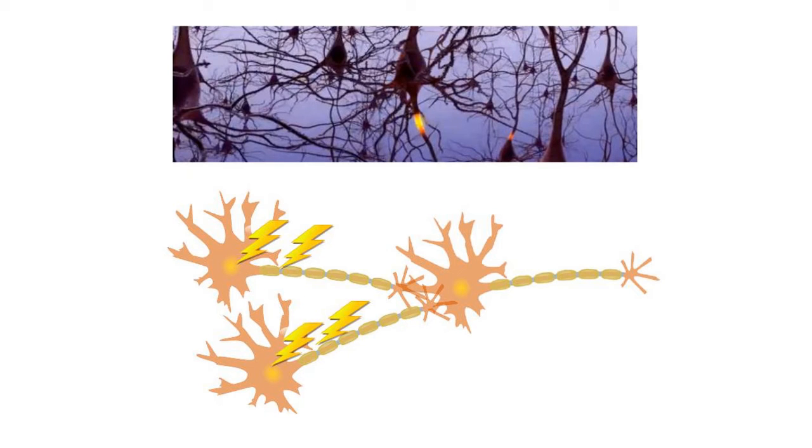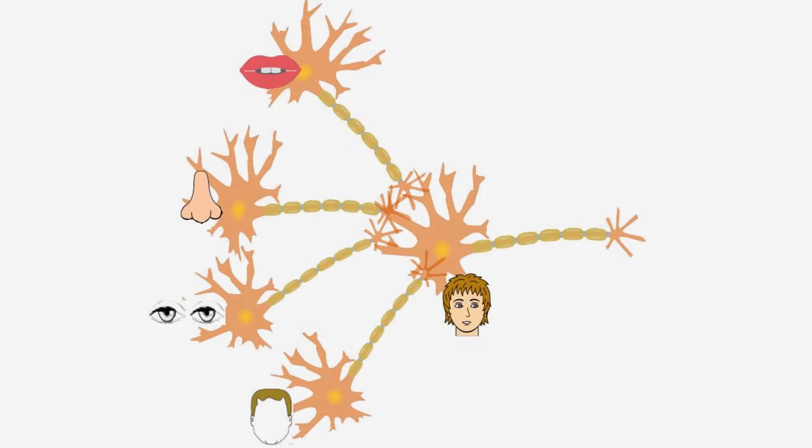When neurons fire, they help connected neurons to fire. For example, when the face part neurons are activated together, they cause the face neuron to fire.